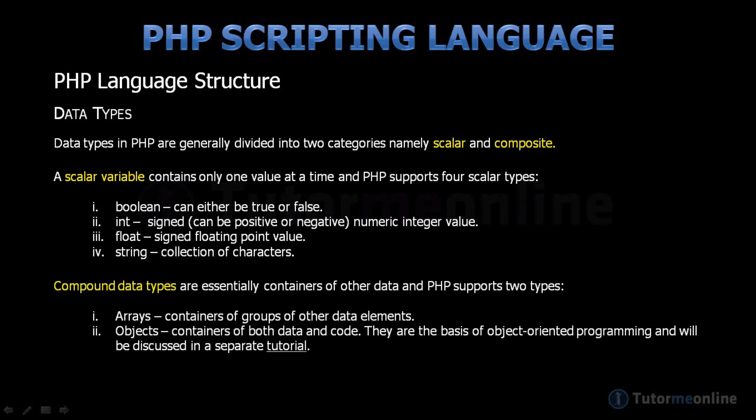Composite or compound data types are essentially containers of other data, of which PHP supports two. Arrays, which are containers of groups of other data elements. And objects, which are containers of both data and code. They are the basis of object-oriented programming, and will be discussed in a separate tutorial.